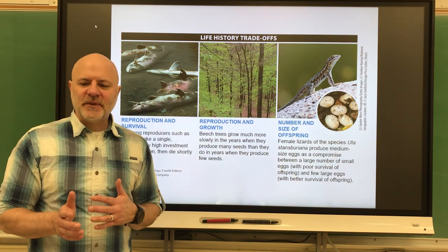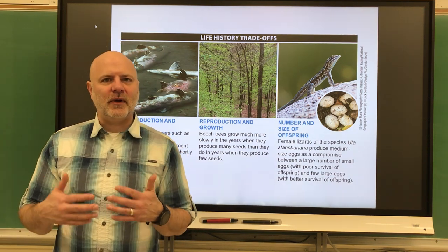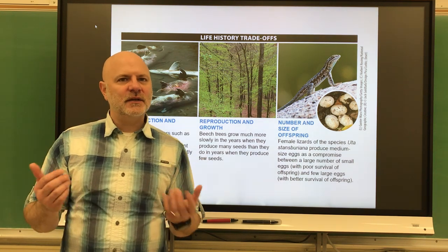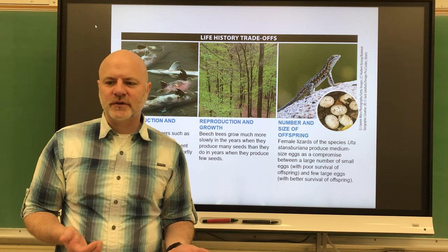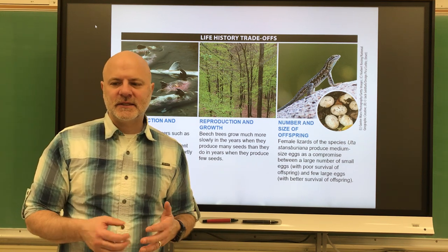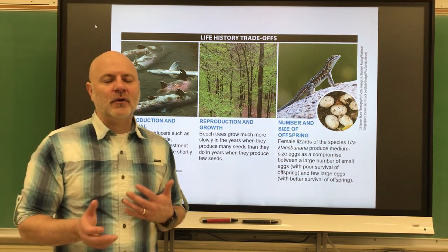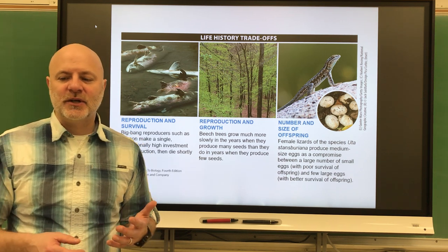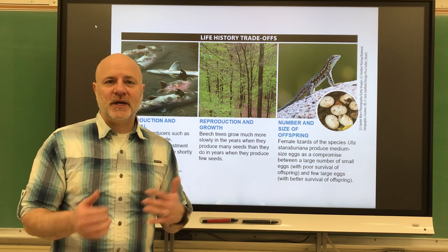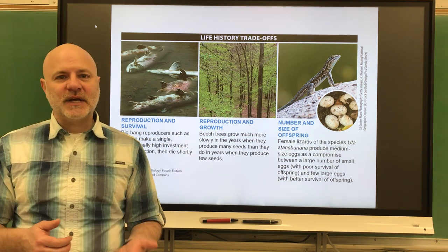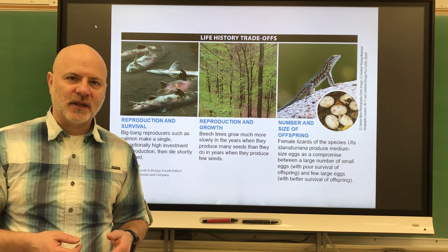Biotic potential is the maximum population growth under ideal conditions — nothing is hindering growth, so there's no predation, disease, or competition. Disease, predation, and competition for resources are lumped together as environmental resistance — environmental factors that limit population size. The realized rate of population growth, or R, is the number of individuals added to a population minus the number lost. It equals births plus immigration minus deaths and emigration.